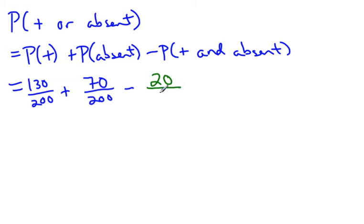We take the 20 out of 200, subtract that off. So we get rid of that overlap that we counted twice. So 130 plus 70 is 200 minus the 20, gives us the 180 out of 200 that we got before.